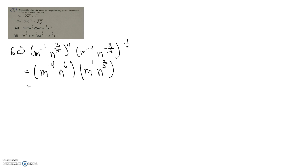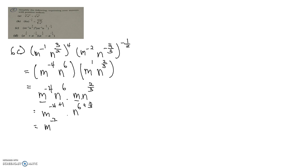So what this becomes is m to the power of minus 4 times n to the power of 6, times m, times n to the power of 2 thirds. Now we look at the common bases. For m: minus 4 plus 1 — taking m to the power of 1 — multiplied by n to the power of 6 plus 2 thirds. Simplifying, we get m to the power of minus 3, times n to the power of 20 over 3. The problem is m has a negative index, so we bring m down into the denominator. The answer is n to the power of 20 over 3, over m to the power of 3.